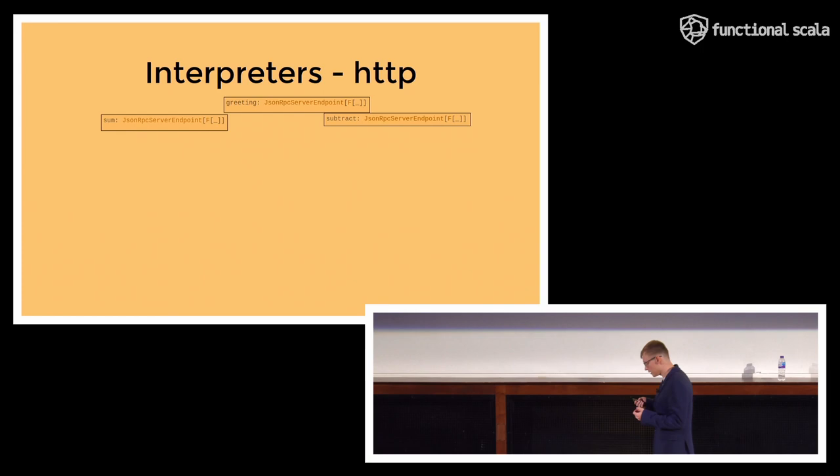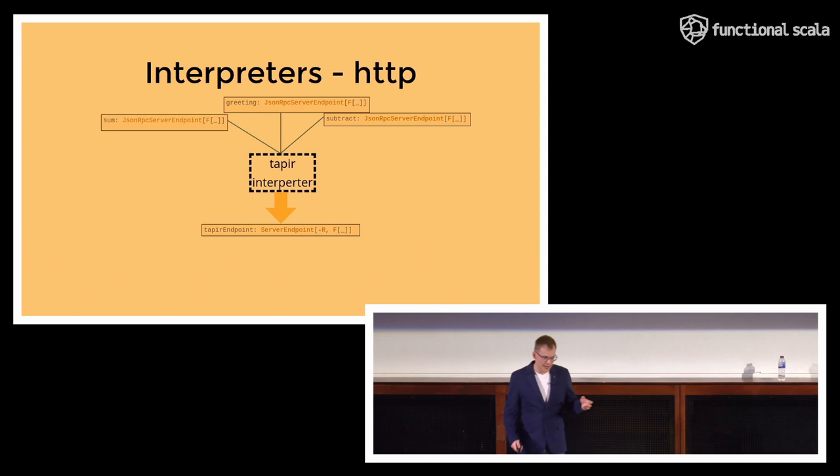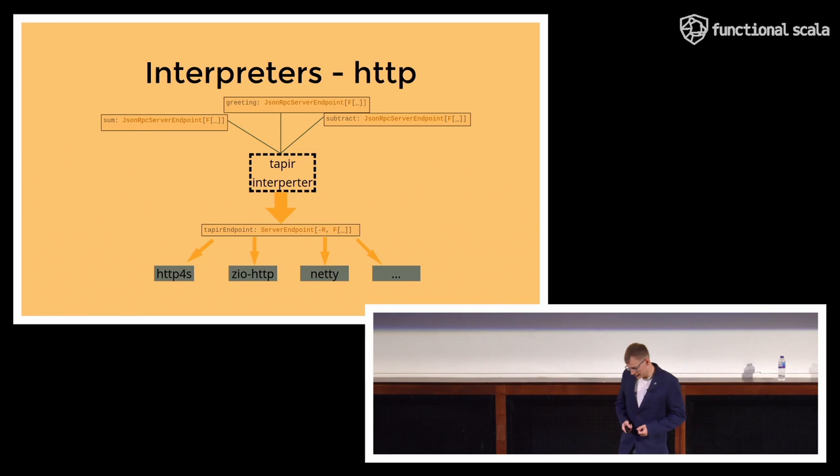So now, once we know how we can encode our JSON-RPC API with Armadillo, let's see what else can we do with this Armadillo. So we can actually convert endpoints written in Armadillo using Tapir interpreter into a single Tapir HTTP endpoint and combine it with the rest of the HTTP API expressed as Tapir and exposed through many of the supported Tapir HTTP servers, be it HTTP4S, ZIO HTTP NETTY, or anything else. And this is really cool because the server endpoint that we obtain by this conversion is really a regular Tapir endpoint. No modifications were required into Tapir to support it. No Tapir were harmed during this project.